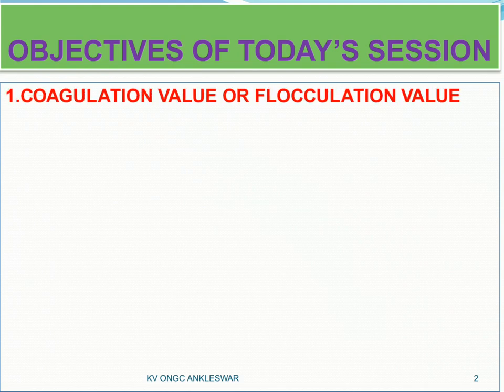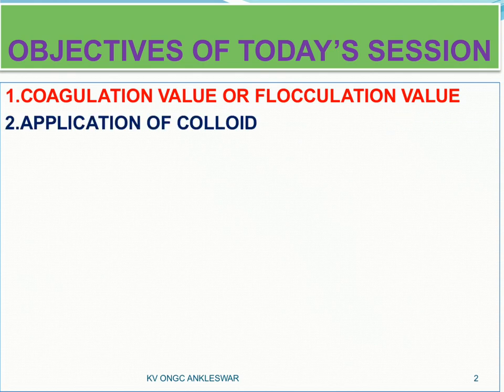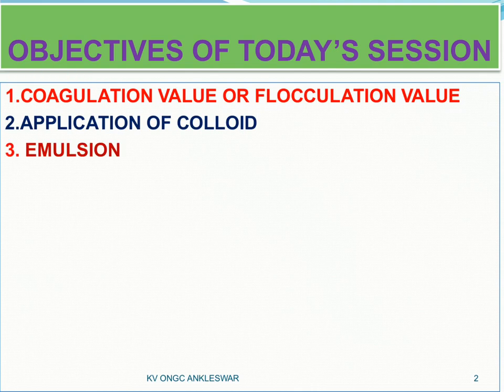Good morning students. Today is the last session for the chapter Surface Chemistry. The objectives for today's session are: we are going to learn about the coagulation value or flocculation value, and then we will study the application of colloid emulsions. So these are the three main topics about which we are going to learn today. We start with the topic of coagulation.